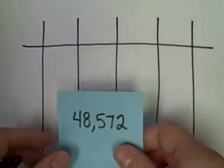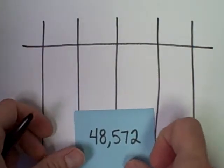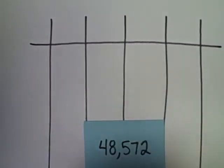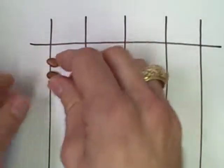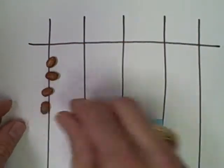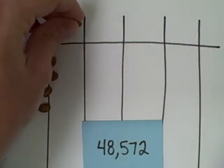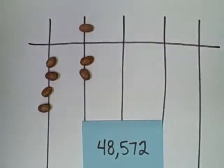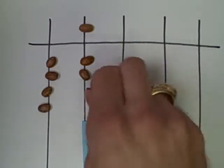So to represent a number like 48,572, I've got four ten thousands, eight thousands, so I put a five thousand, six, seven, eight.